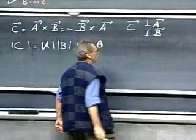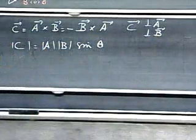and perpendicular to B. In other words, it's perpendicular to the plane of the two vectors.